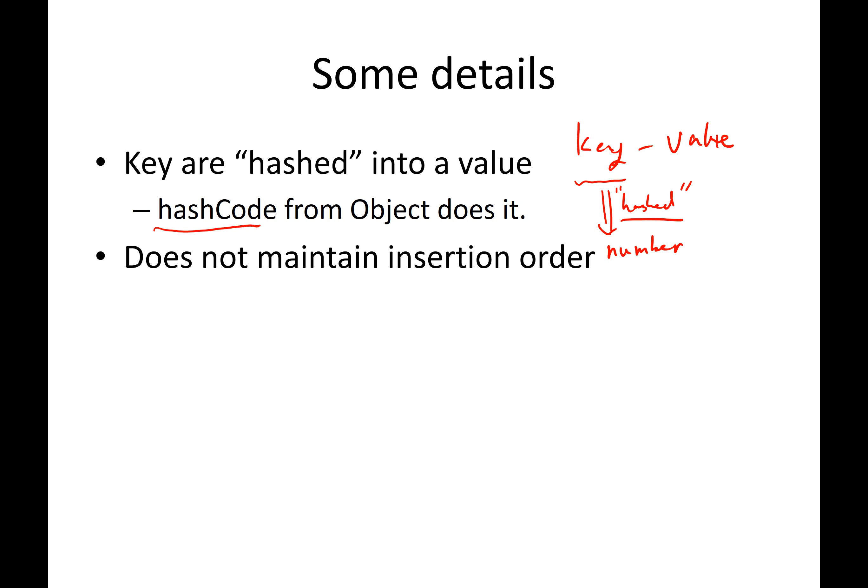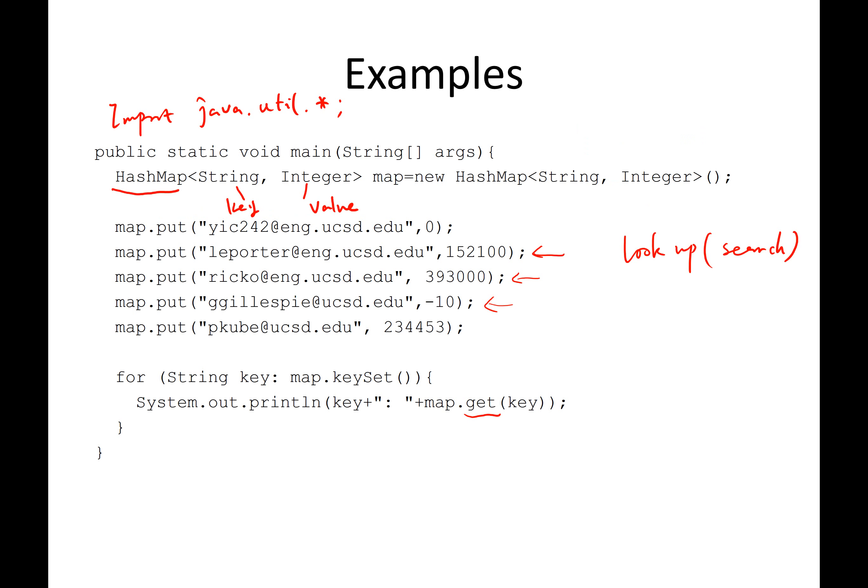The other thing is when you insert something into a map, for example, in this exercise, when I traverse the map again after I do the insertion, you will realize that the first thing it prints out may not be YJC242. It may be somebody else's email because maps don't maintain your insertion order, at least not for hash maps. There are other kinds of maps like tree maps or linked maps. Linked maps can maintain the insertion order, but not for tree maps or hash maps.